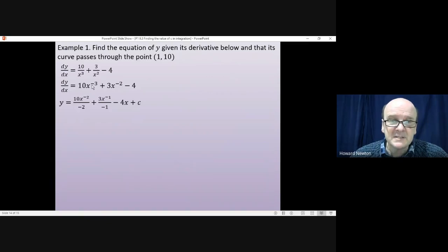So integrating the left hand side just gives us y, and then integrating the 10x⁻³, the power goes up by 1 and we divide by the new power. Integrating 3x⁻², the power goes up by 1, we divide by the new power. When you integrate -4 you get -4x, and also we get this arbitrary constant that we always need to remember.